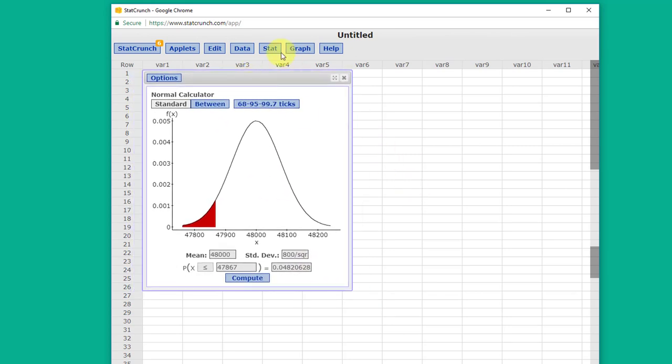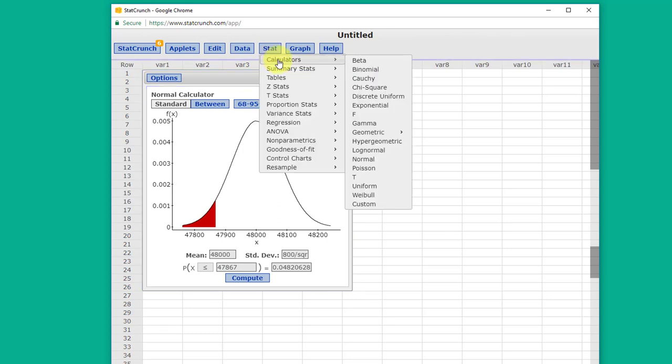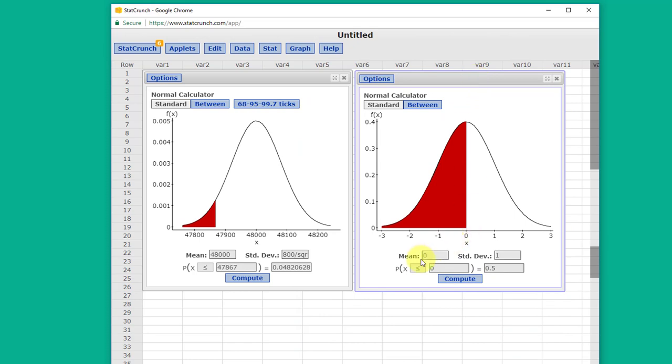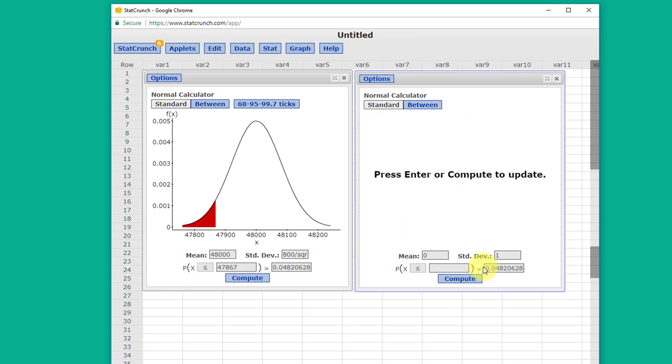I'm just going to open up another calculator here. This time, the way I like to do it, we've got our standard normal with a zero and one for the mean and standard deviation. I take this probability and I copy it, and I paste it over here. Make sure my direction, again we want the left tail, click compute, and that gives us our z value that we're looking for. It's minus one point six six, which is less than two as we talked about, so that's not unusual.